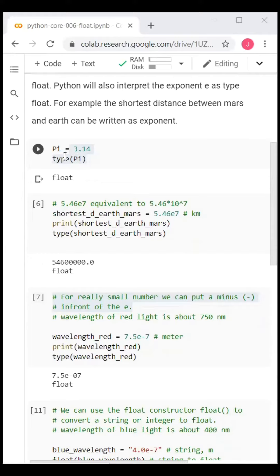For example, the shortest distance between Mars and Earth can be written as exponent. And it is of type float.